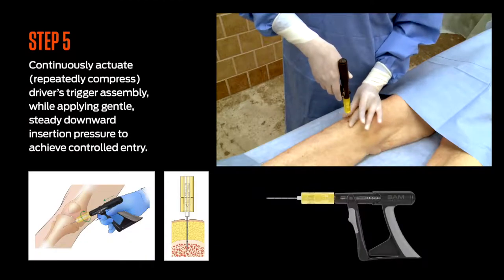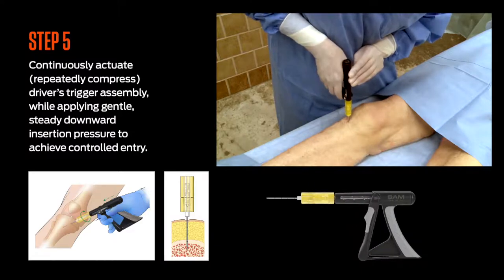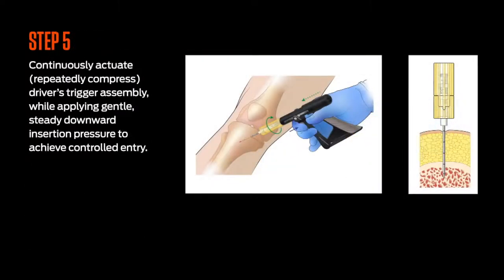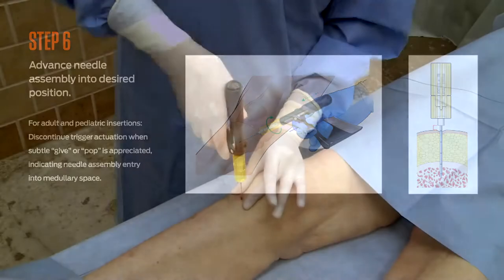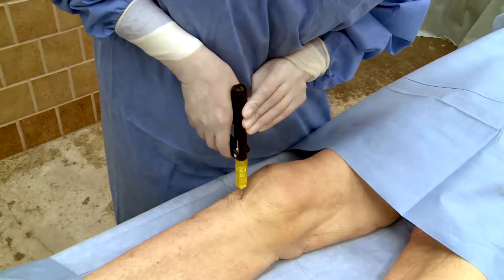Step 5: Continuously actuate or repeatedly compress the driver's trigger assembly while applying gentle, steady, downward insertion pressure to achieve controlled entry. It's important not to use excessive force — use minimal, gentle, downward insertion pressure, allowing the needle assembly tip's rotation to penetrate the compact bone. Step 6: Advance the needle assembly into the desired position. For adult and pediatric insertions, discontinue trigger actuation when a subtle give or pop is appreciated, indicating needle assembly entry into the medullary space.